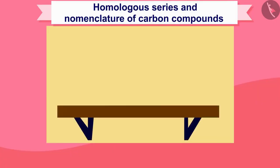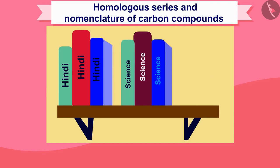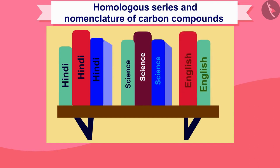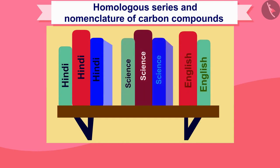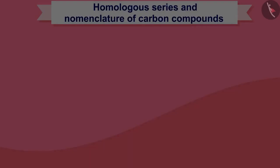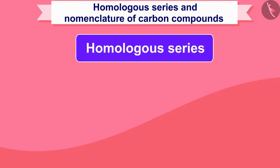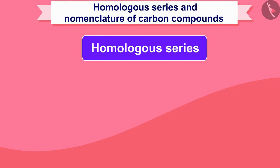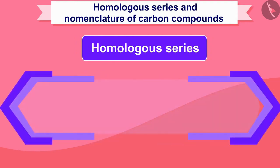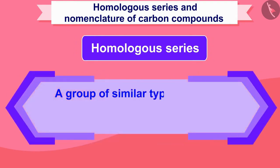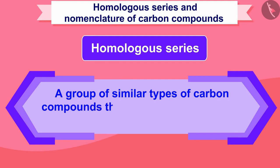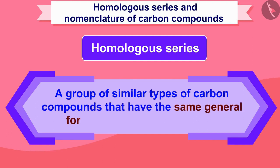Suppose we divided many books according to their subject — all the books of Hindi, English, Science etc. were kept separately. As its name suggests, homologous carbon compounds can be defined as a group of similar type of carbon compounds that have the same general formula and functional group.